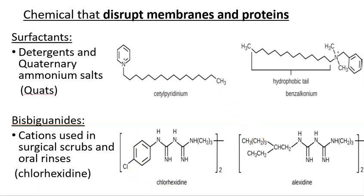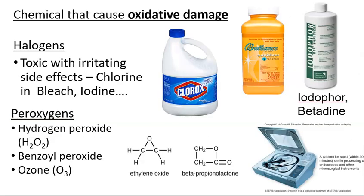Halogens and peroxygens cause oxidative damage, resulting in cell death by oxidizing organic molecules. Cells with antioxidants can resist some oxidative damage, but overwhelming them — like with bleach — causes damage they can't repair. Bleach has irritating side effects; put your hand in bleach and you can feel your skin getting slippery as epidermal cells are damaged.